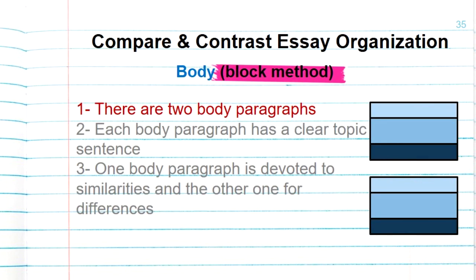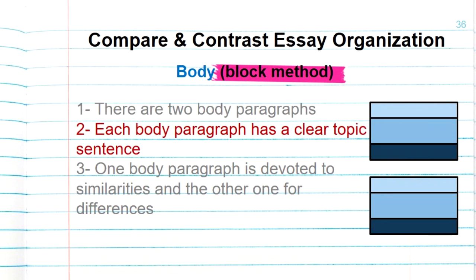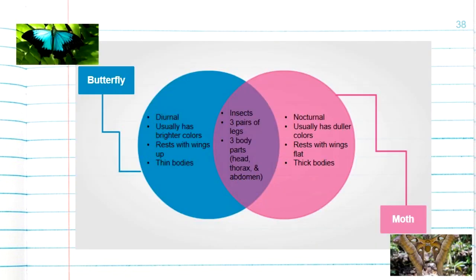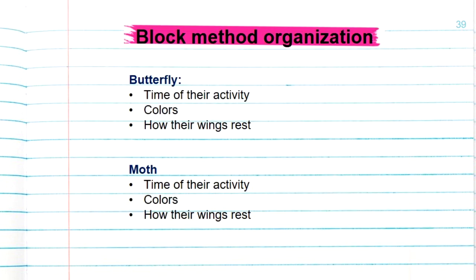In the second way of organizing body, which is the block method, we also have two body paragraphs. Each body paragraph has a clear topic sentence. One body paragraph is devoted to similarities and the other one for differences. So if I want to organize information about butterfly and moth also using block method, in the first paragraph I will discuss the butterfly only, and in the second paragraph I will discuss the moth only.